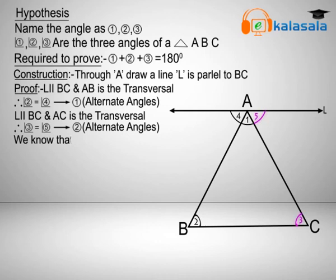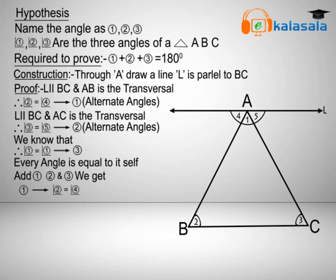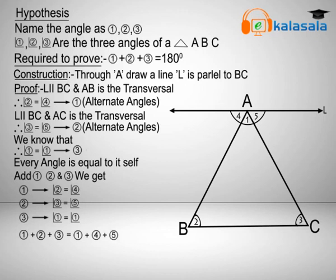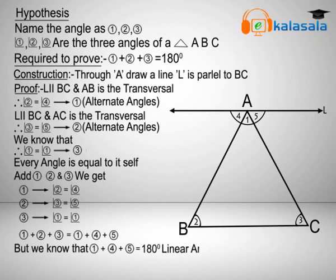We know that angle 1 equals angle 1, since every angle is equal to itself — this is equation number 3. Now adding equations 1, 2, and 3, we get: angle 1 plus angle 2 plus angle 3 equals angle 1 plus angle 4 plus angle 5, which equals 180 degrees, as they are linear angles. Therefore, angle 1 plus angle 2 plus angle 3 equals 180 degrees.